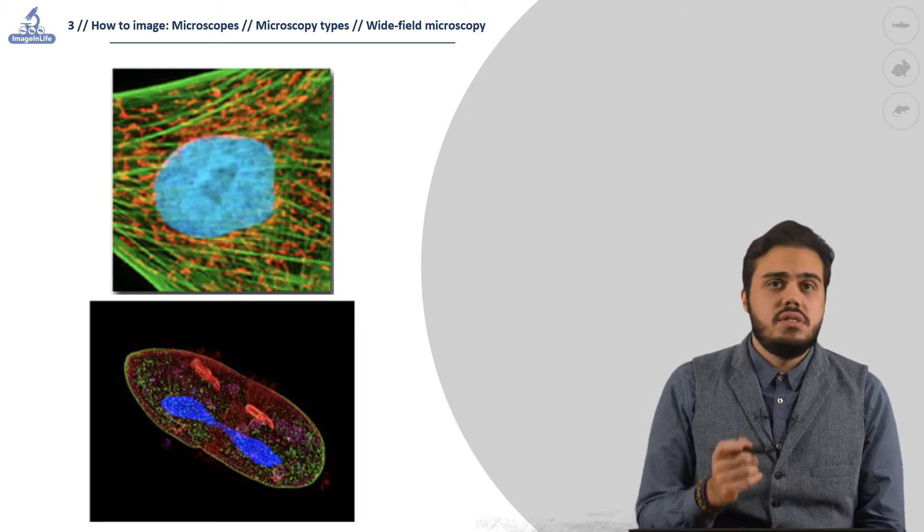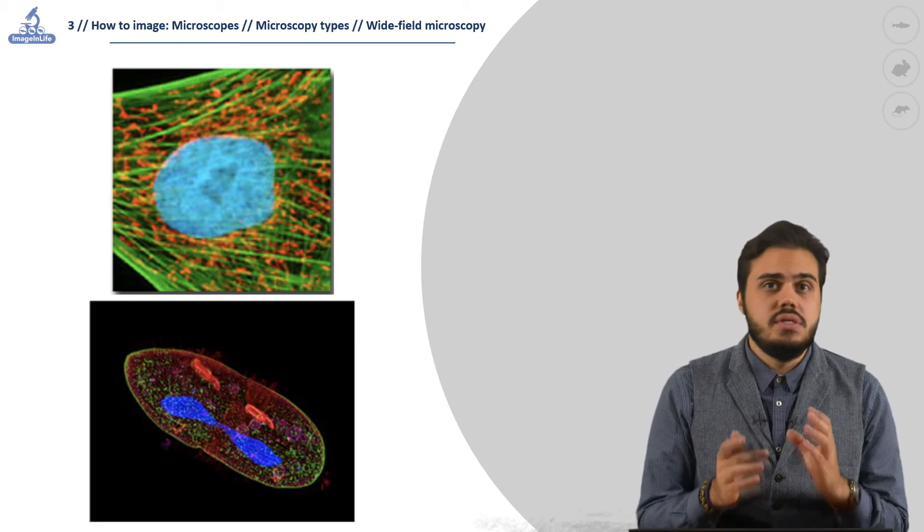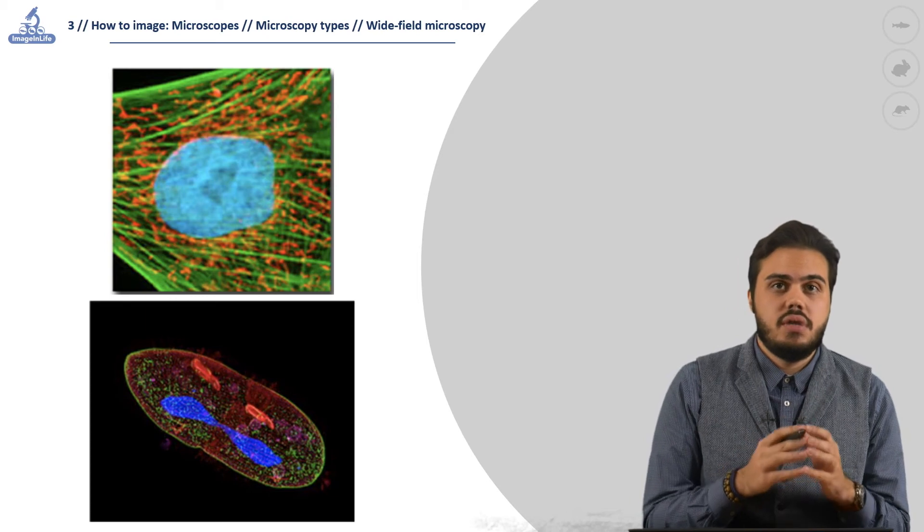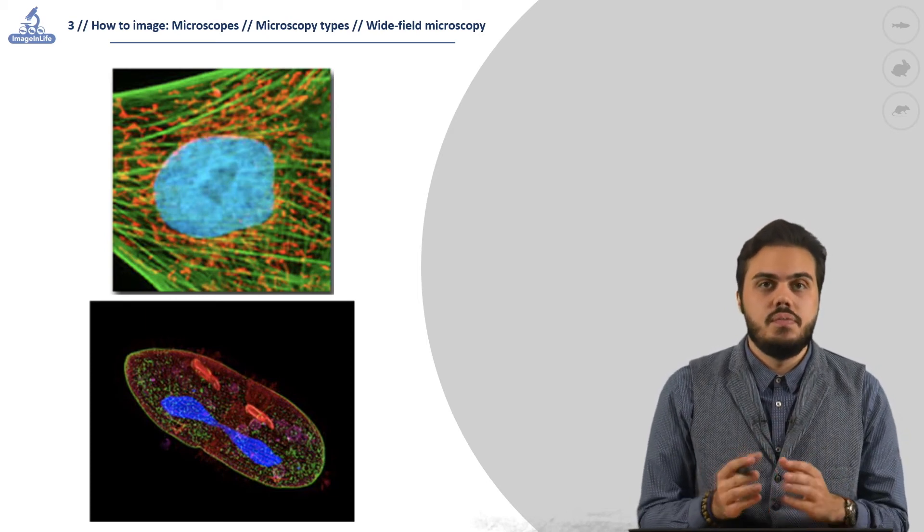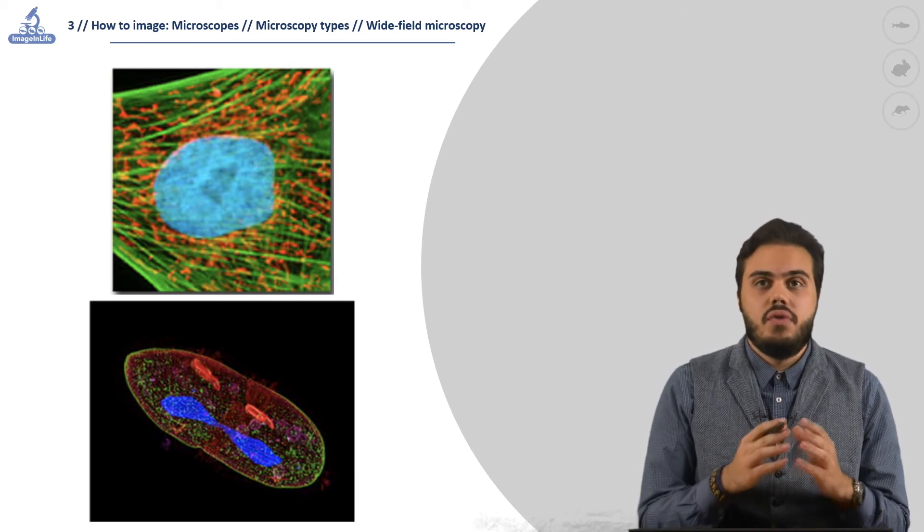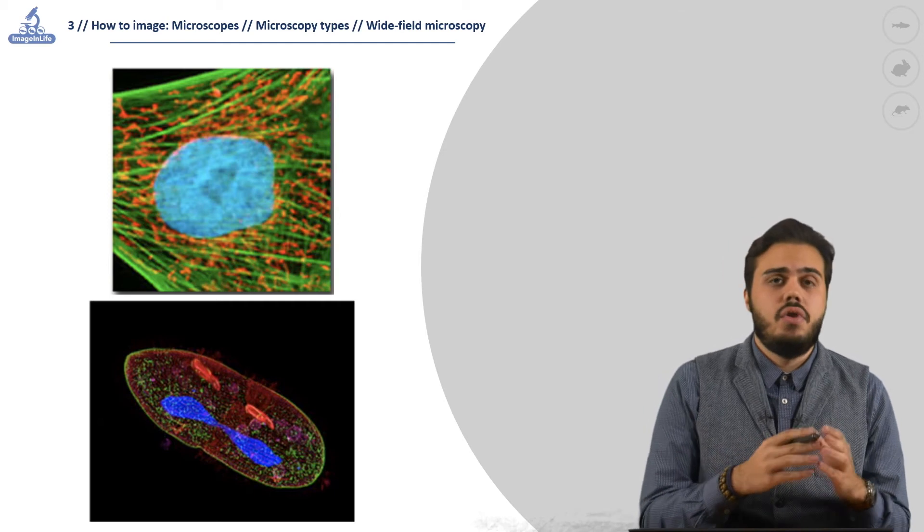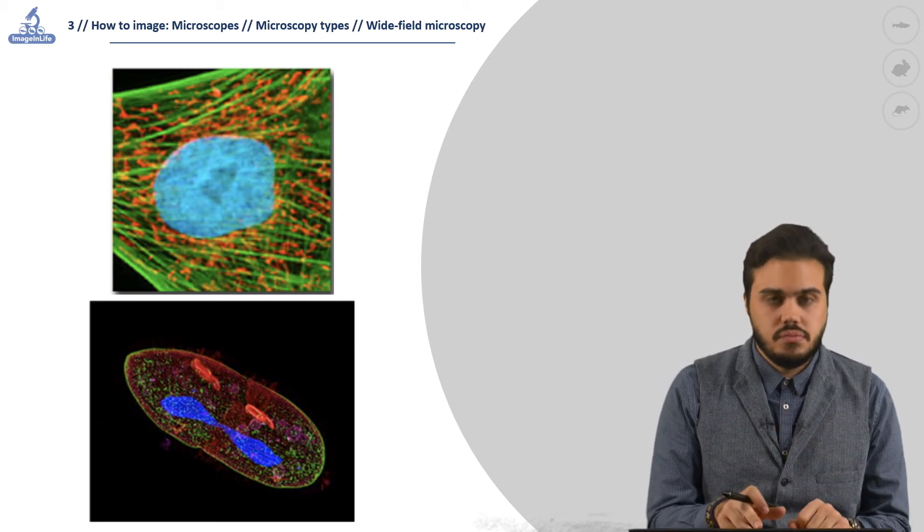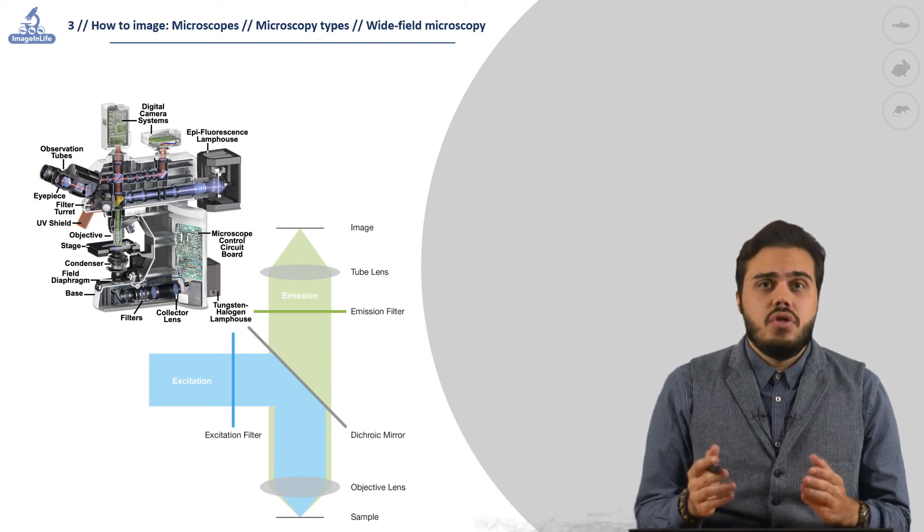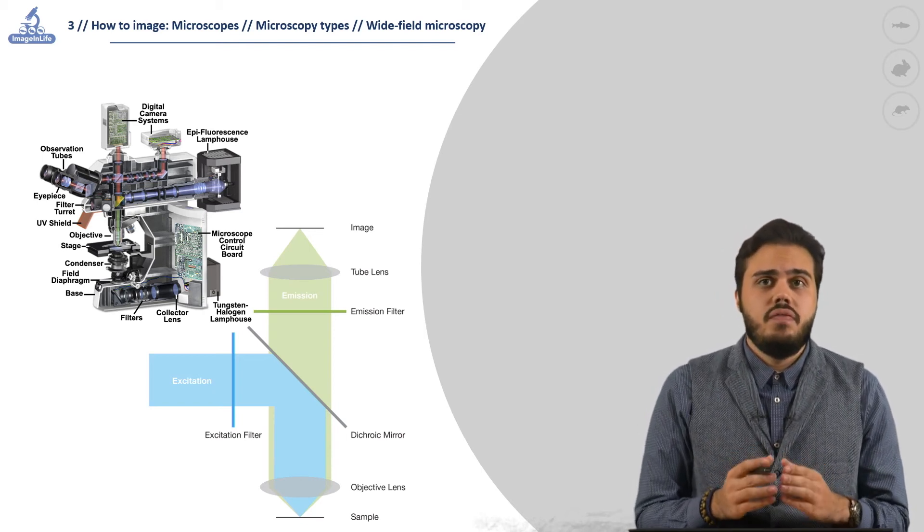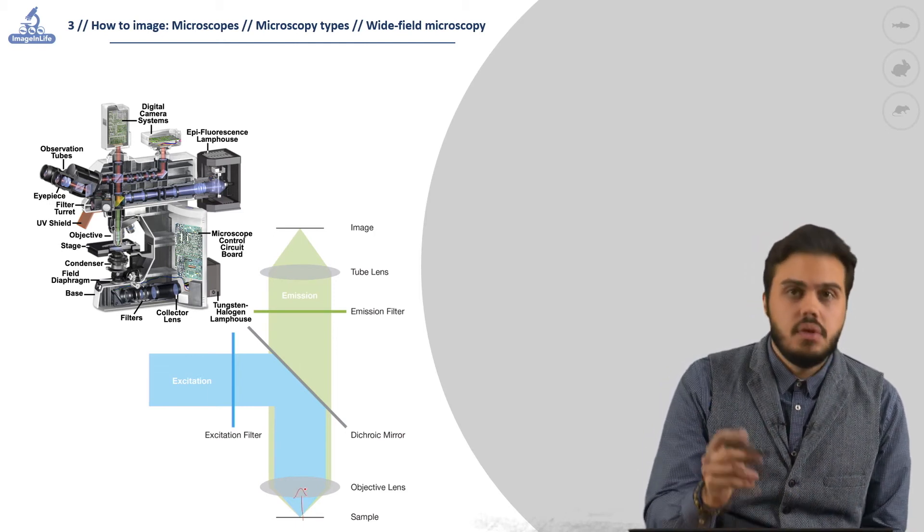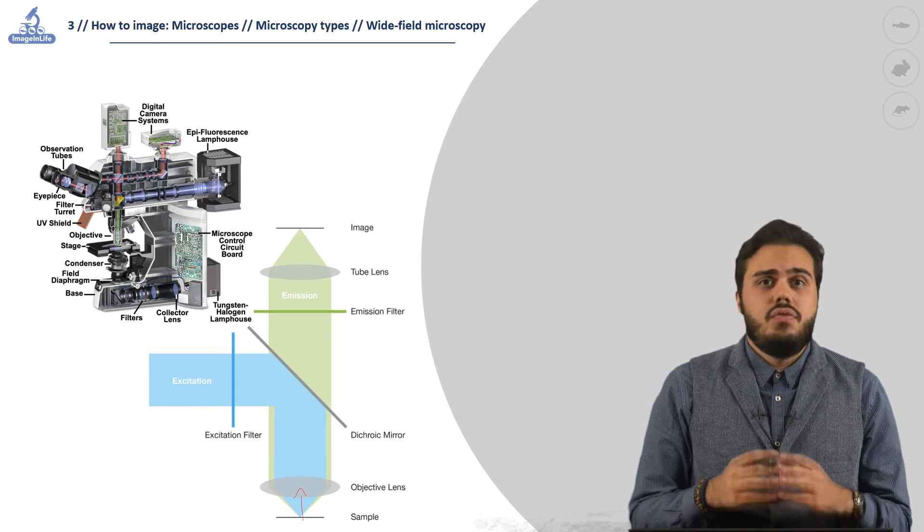Often it is necessary to observe specific structures inside the specimen itself, and one way to do this is to label a specific structure with fluorescent molecules. These molecules are excited by a specific wavelength of light and immediately re-emit light of a longer wavelength. In epifluorescent microscopy, the objective acts as a condenser, so it's always well aligned, increasing greatly the quality of the images.